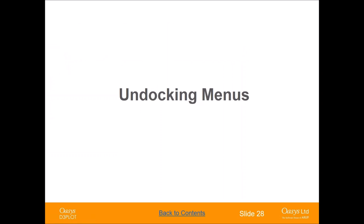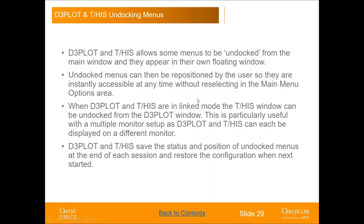The next thing in the contents is undocking windows, which makes it easier to work with the menu systems in POST. There are times when you're using D3 Plot and THIS that you want to repeatedly use a particular menu without always having to click the corresponding button in the tools panel. D3 Plot and THIS both support undocking some menus into a floating window which can be repositioned and always be available, and you can also do this with THIS when you're in linked mode with D3 Plot.